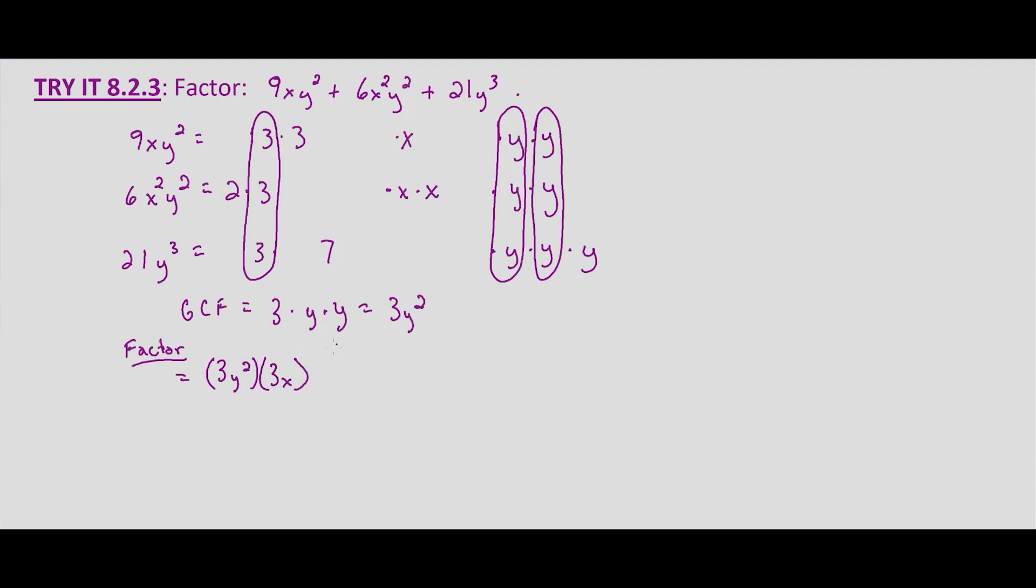So 3y² times what's left in the second row, 2 times x times x. So 2x², so times 2x².